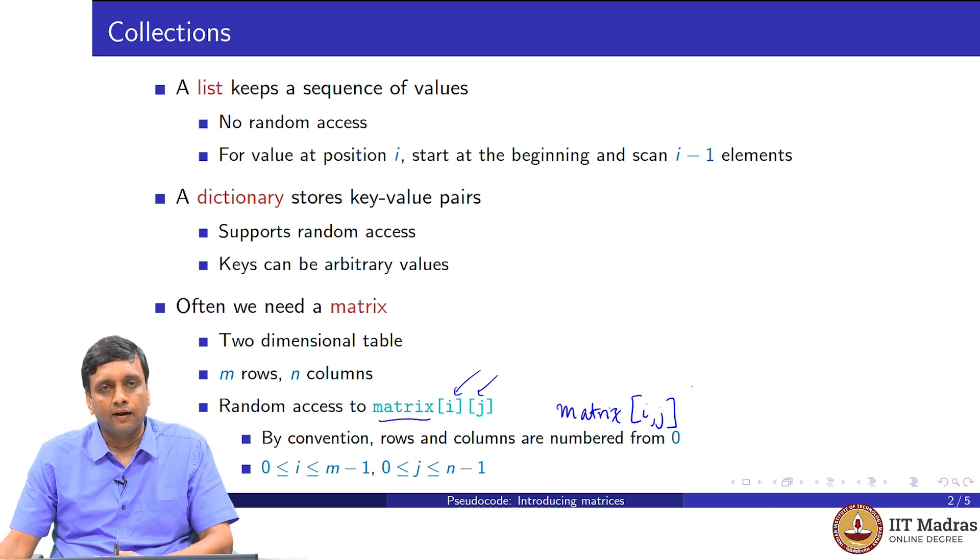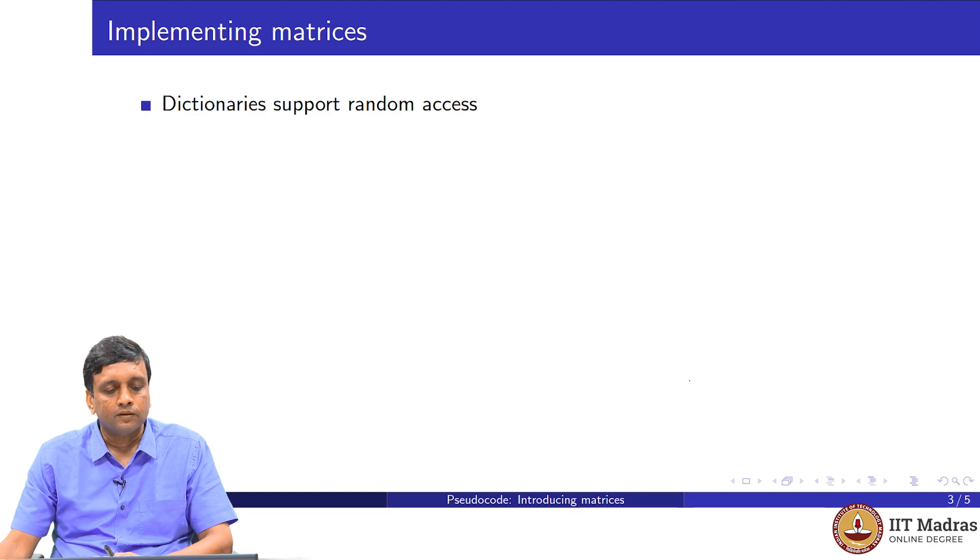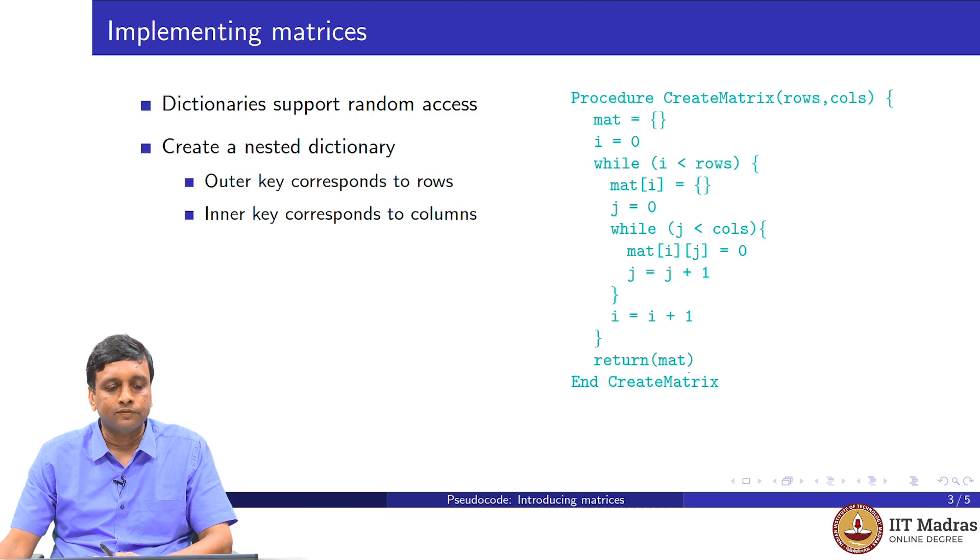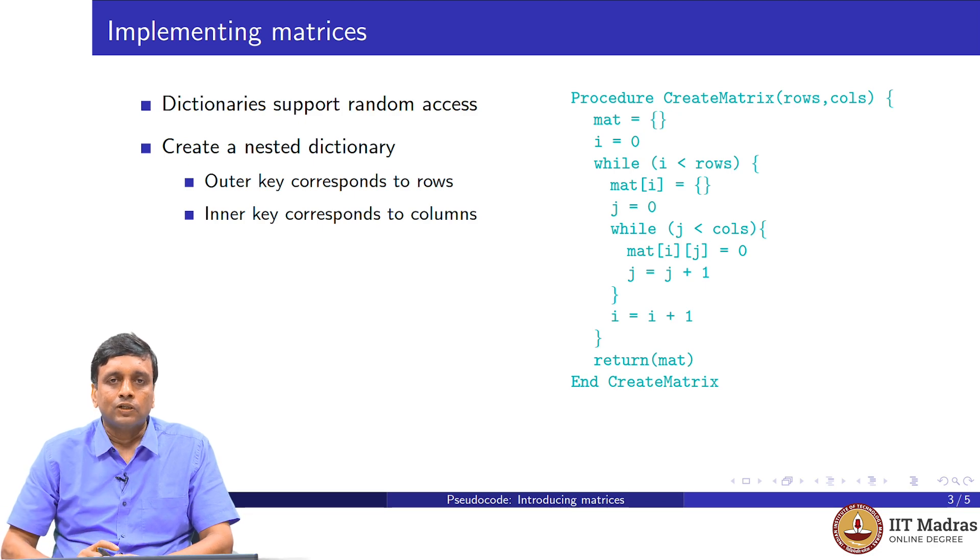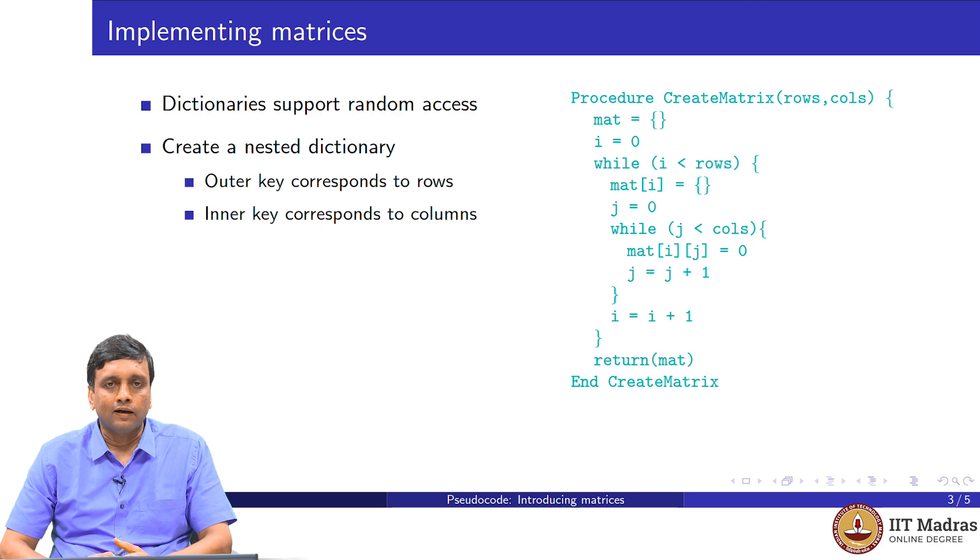The question now is how would we implement this? Do we need some new concepts in order to use matrices? We already have a collection which supports random access, namely a dictionary. An easy way to implement matrices for our purpose is just to assume that they are special kinds of dictionaries. In particular, we can think of a matrix as a nested dictionary. At the top level, the keys correspond to the rows. I have keys 0 to m minus 1, which correspond to the rows. And for each of these keys, the value is another dictionary with keys 0 to n minus 1.